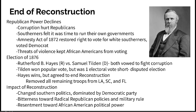Reconstruction came to an end in 1876 as a result of the election of 1876. The Republican candidate Rutherford B. Hayes ran against Democrat Samuel Tilden; both vowed to fight government corruption. Tilden won the popular vote but was one electoral vote short of winning the presidency, making it a disputed election. A committee mostly controlled by Republicans awarded the election to Hayes. Hayes won but agreed to end Reconstruction — he removed all remaining troops from Louisiana, South Carolina, and Florida, and officially ended Reconstruction in 1876.